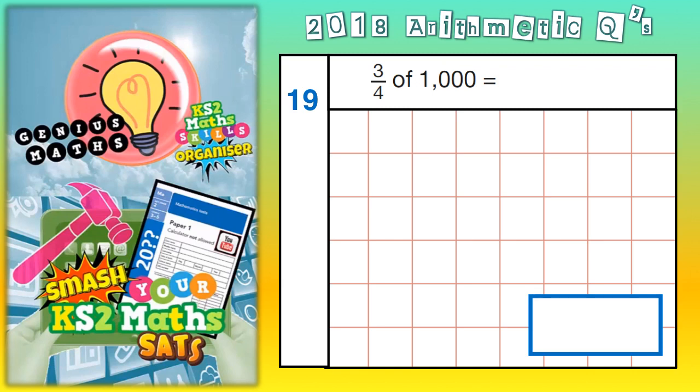Now then, easiest way to do this is probably just to draw a bar to represent one thousand. Now, if the whole bar represents one thousand, and we are trying to split it into quarters,